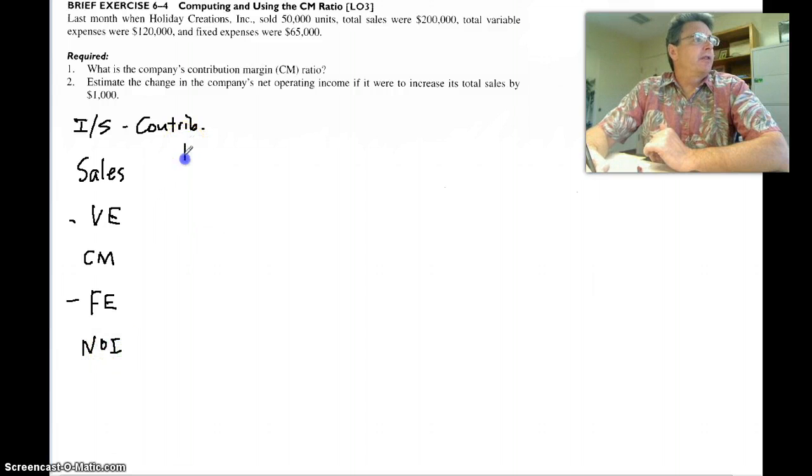And remember we've got three columns now. The total column, the per unit column, and the new ratio column or percent column, whatever you want to call it.